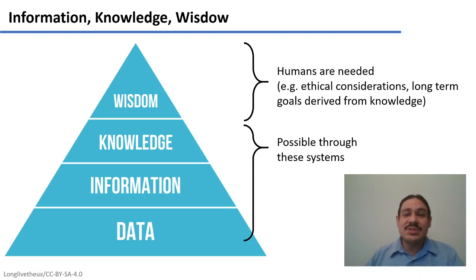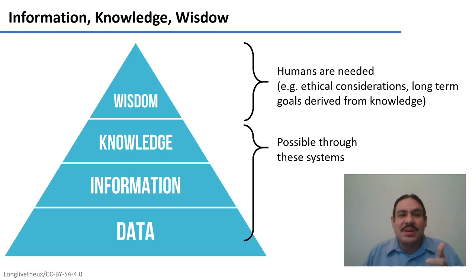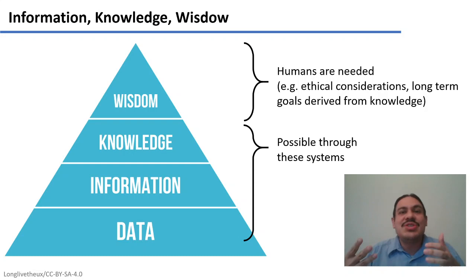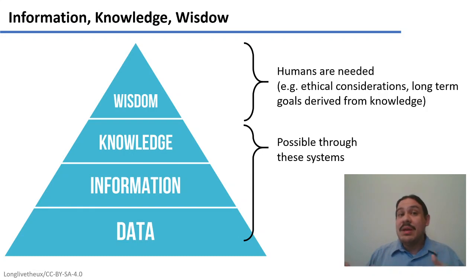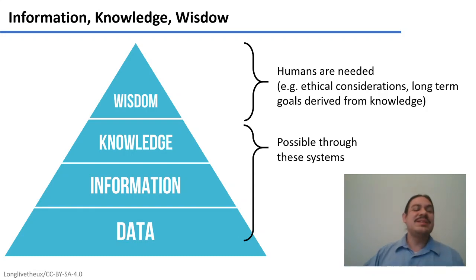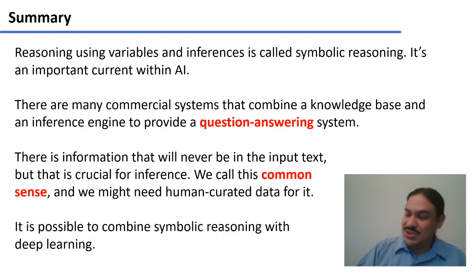We need humans to help with the goals derived from this knowledge — what are we supposed to do with the information that there's climate change, or that there are biases in these systems. We still need humans for wisdom, but as you can see, we do have systems that can transform data into knowledge.